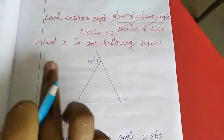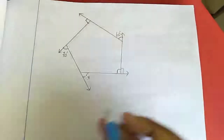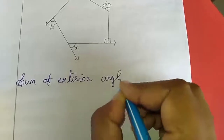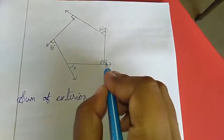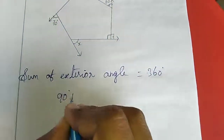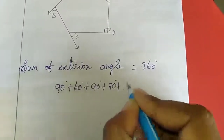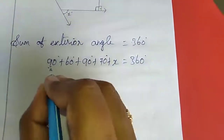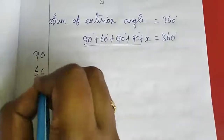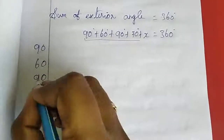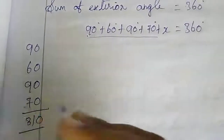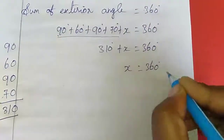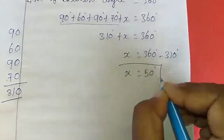Next sum: for this also I am going to use the total sum of exterior angles equal to 360 degrees. The angles are 90, 60, 90, and 70 plus x. Adding 90 plus 60 plus 90 plus 70 gives 310 degrees. So 310 degrees plus x equals 360 degrees, therefore x equals 360 minus 310, which gives x equal to 50 degrees.